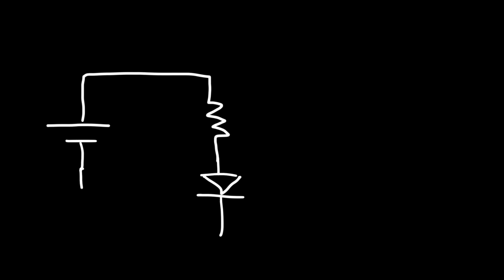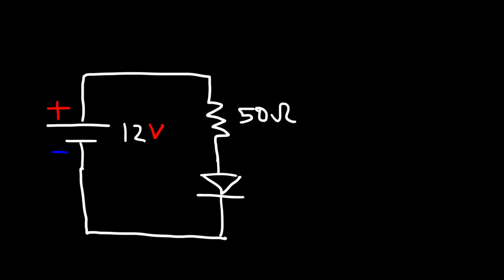Now let's work on a math problem. Let's say we have a circuit with a resistor and a diode. The voltage of the battery is 12 volts — here's the positive terminal and here's the negative terminal. The resistor is 50 ohms, and since it's a silicon diode, the voltage drop across the diode is 0.7 volts. The first question is: will there be a current in this circuit?